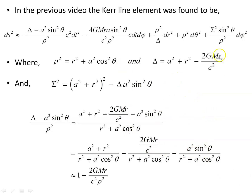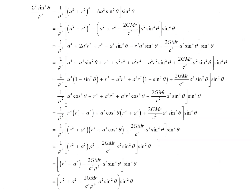Now let's look at another way of writing the expression in front of the d phi squared term. Expanding that out with rho squared and sigma squared we have this object here — rho squared, sigma squared in the square brackets, and sine squared on the end.